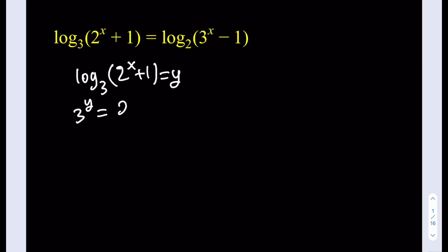3^y = 2^(x+1). 2^x = 3^(y-1). And if you just go ahead and log both sides, then you're going to get x = log₂(3^(y-1)).